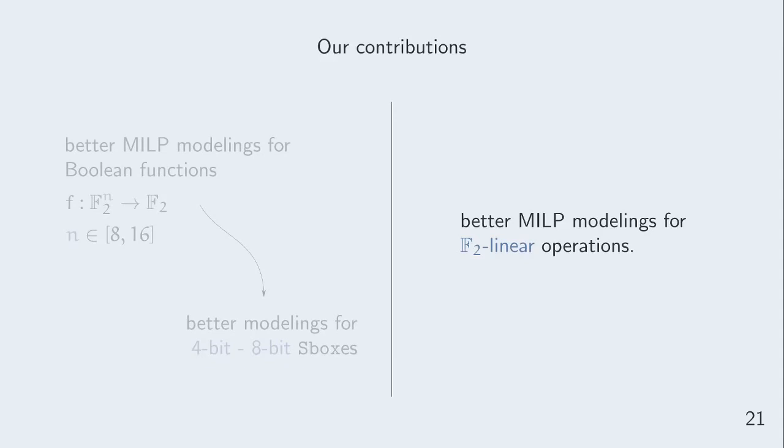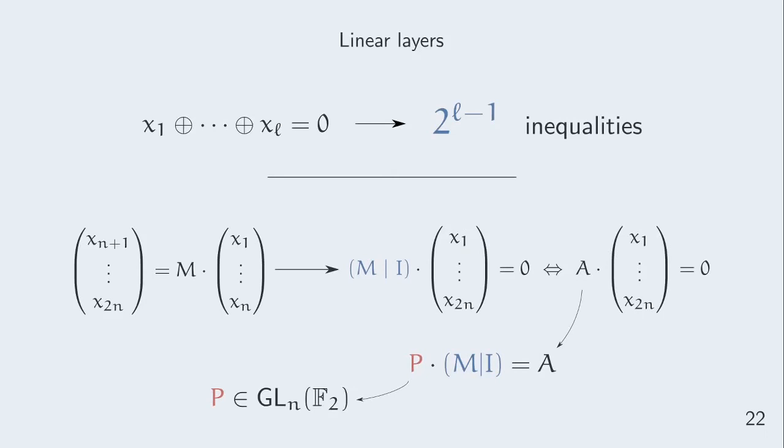Now we know how to model S-boxes, but they are not the only components of symmetric ciphers. Linear layers, which provide diffusion, are also important components to model efficiently. We will start with bad news. Modeling a multiple XOR constraint without introducing dummy variables needs an exponential number of inequalities.